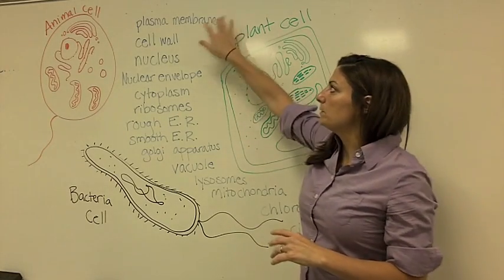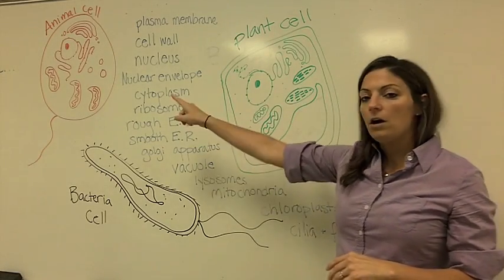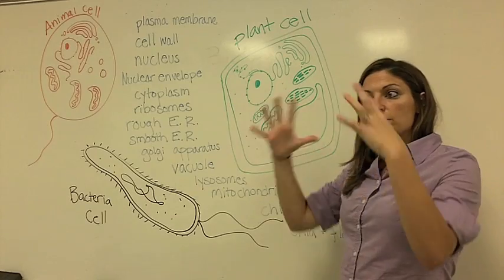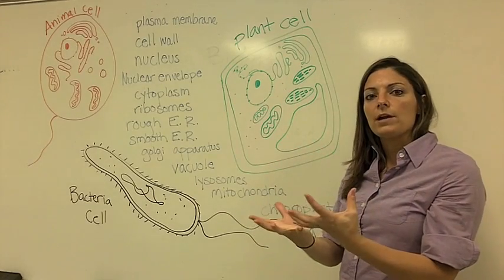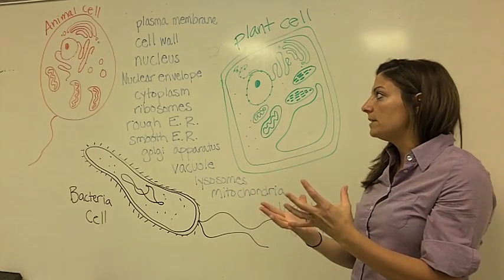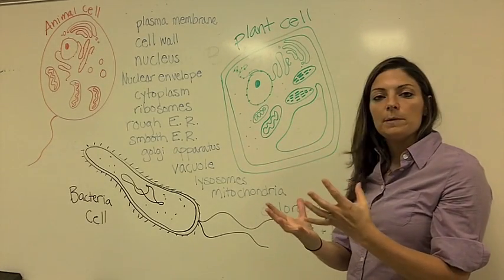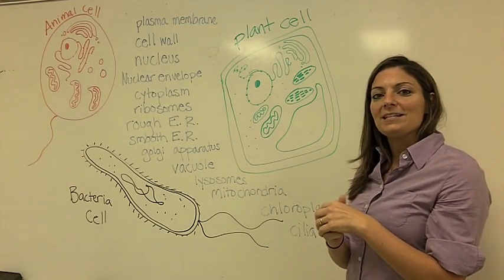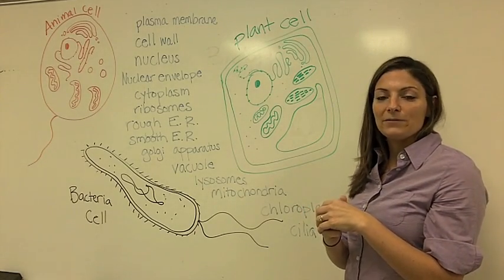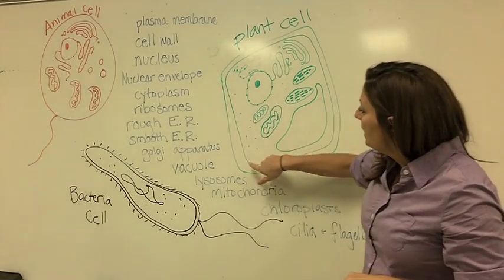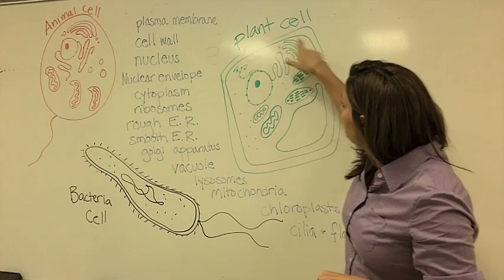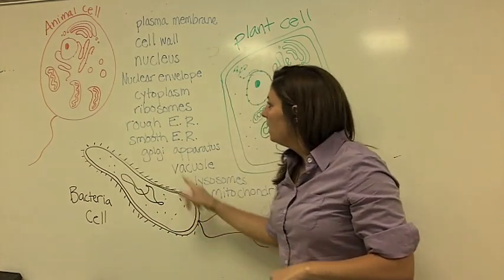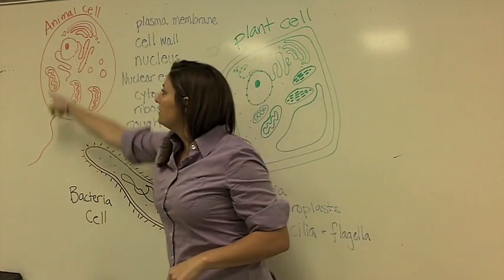First of all, the plasma membrane. All three types of cells have a plasma membrane. That's just the membrane that surrounds the outside of the cells. And remember back from our biochemistry unit, it's made up of phospholipids — so it's made of a lipid. That's the inside membrane here on the cells.